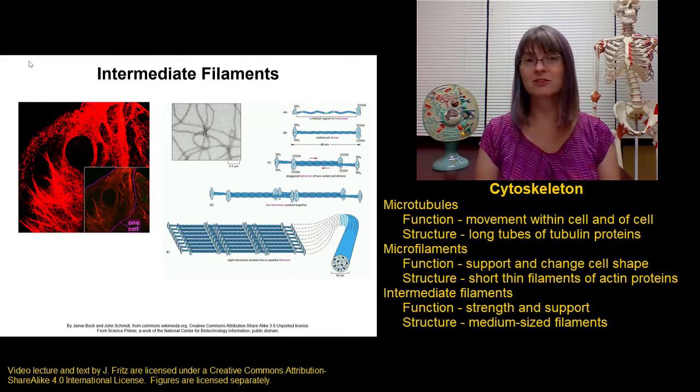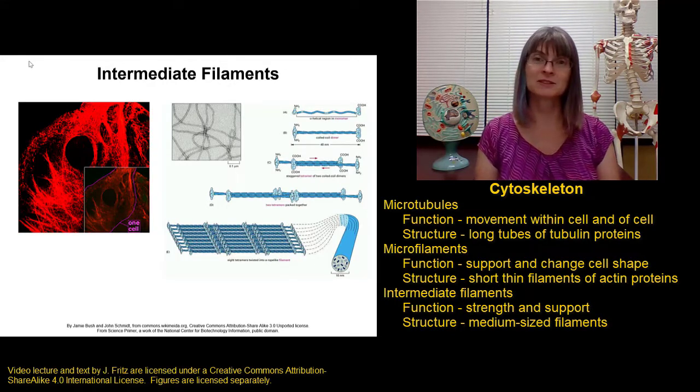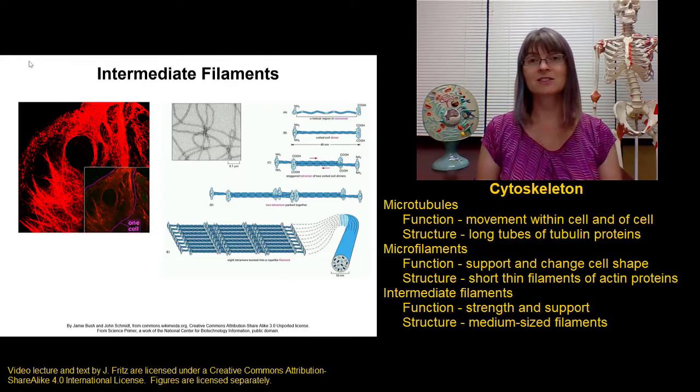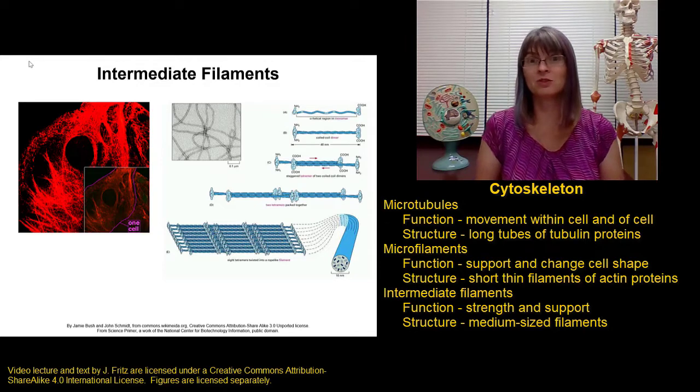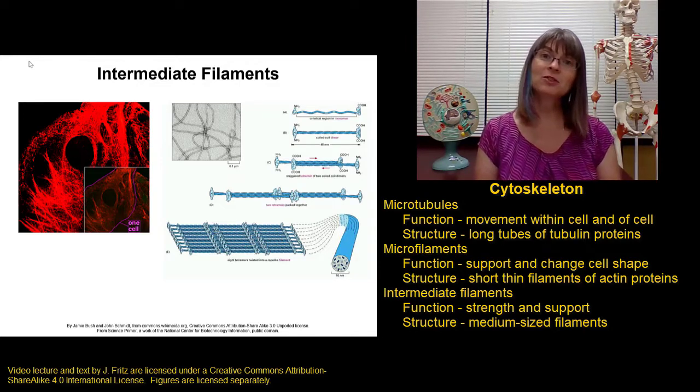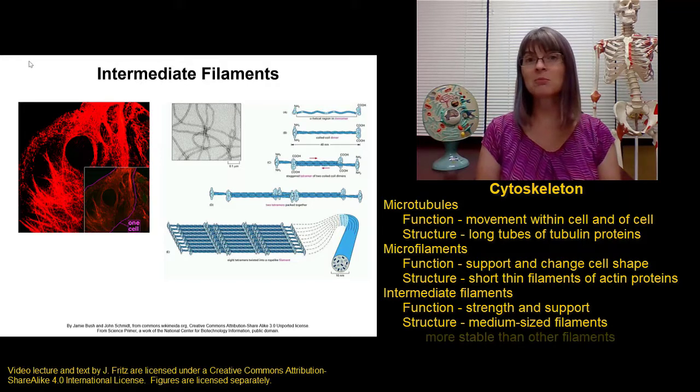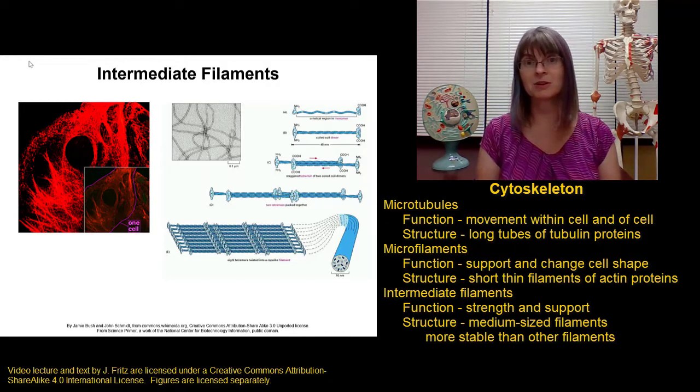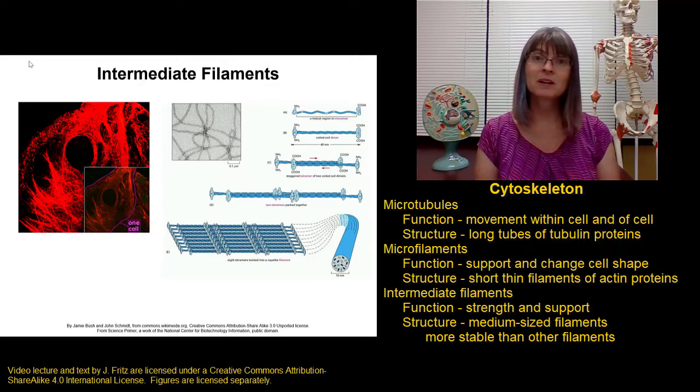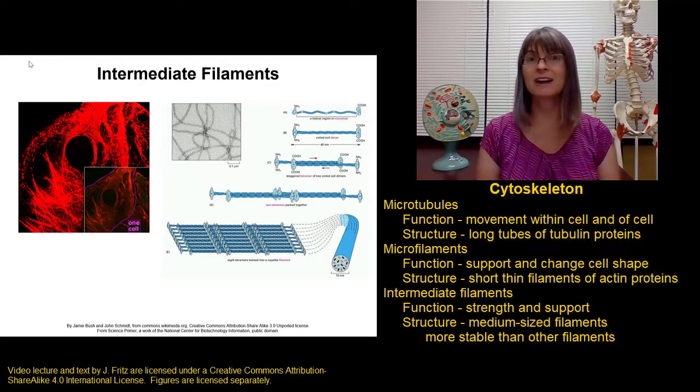The last of the cytoskeletal filaments are the intermediate filaments. These are not as long and thick as the microtubules, but they're not as short and narrow as the microfilaments. They're in the middle, which is why we call them intermediate. The important feature of intermediate filaments is that they are more stable than either the microtubules or the microfilaments, so this gives them a special importance when it comes to providing strength and stability to the cell.